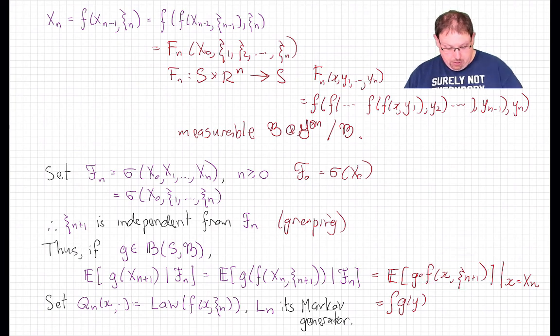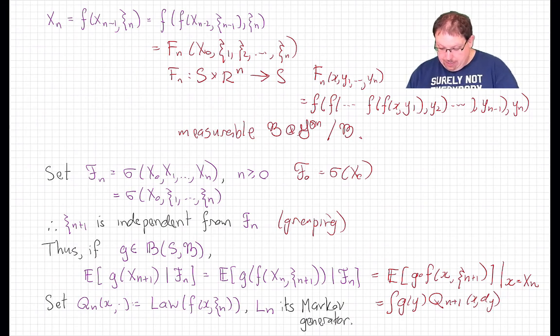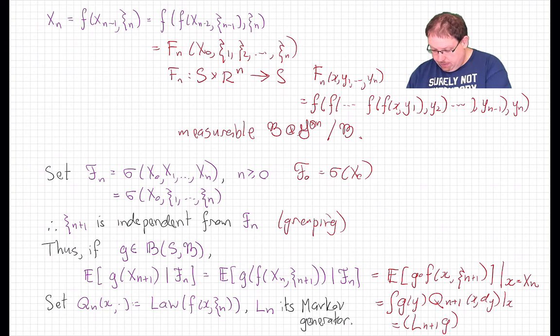Which is just what we defined to be the probability kernel, this time indexed by n+1, of x and dy. And so, that is by definition of the Markov generator, L_{n+1} applied to g.